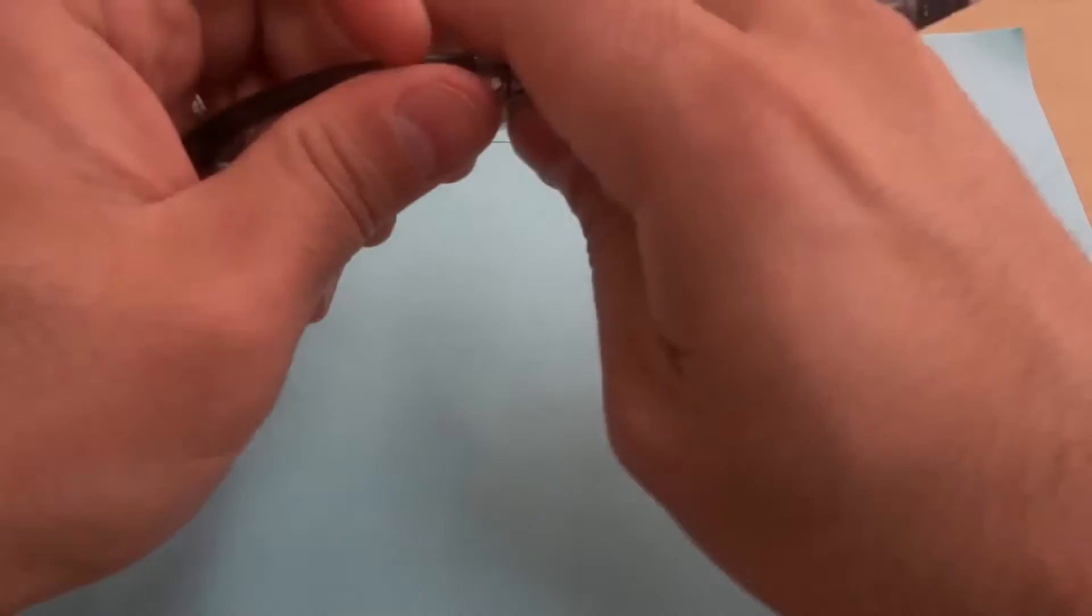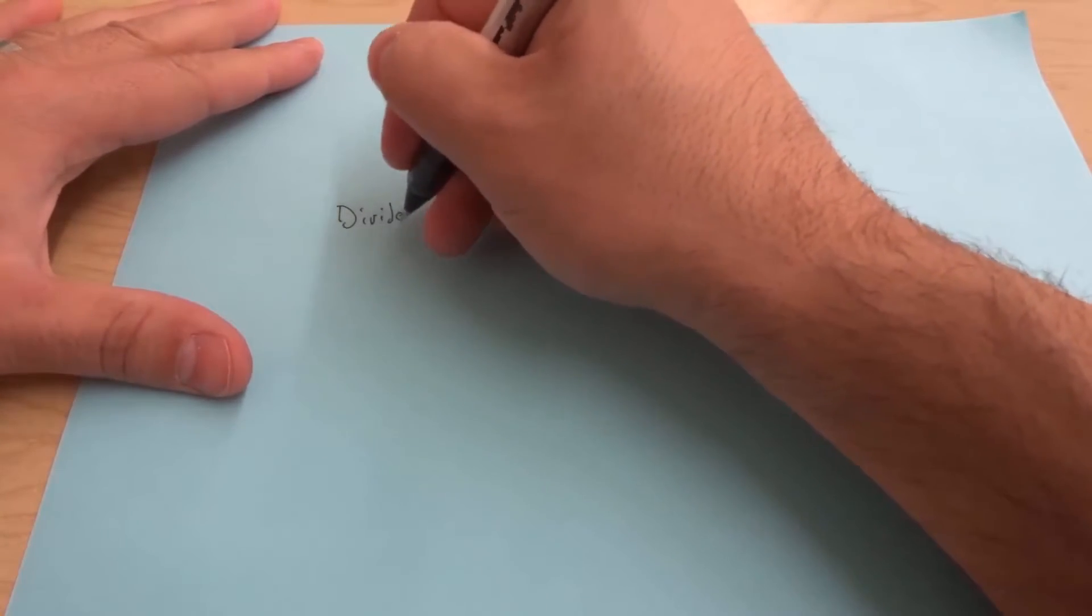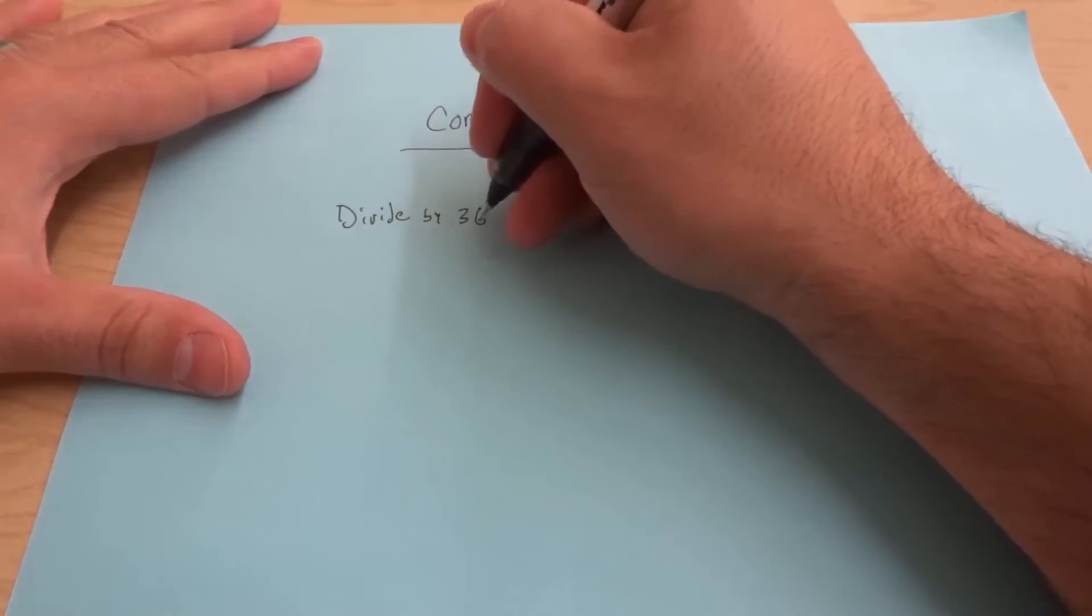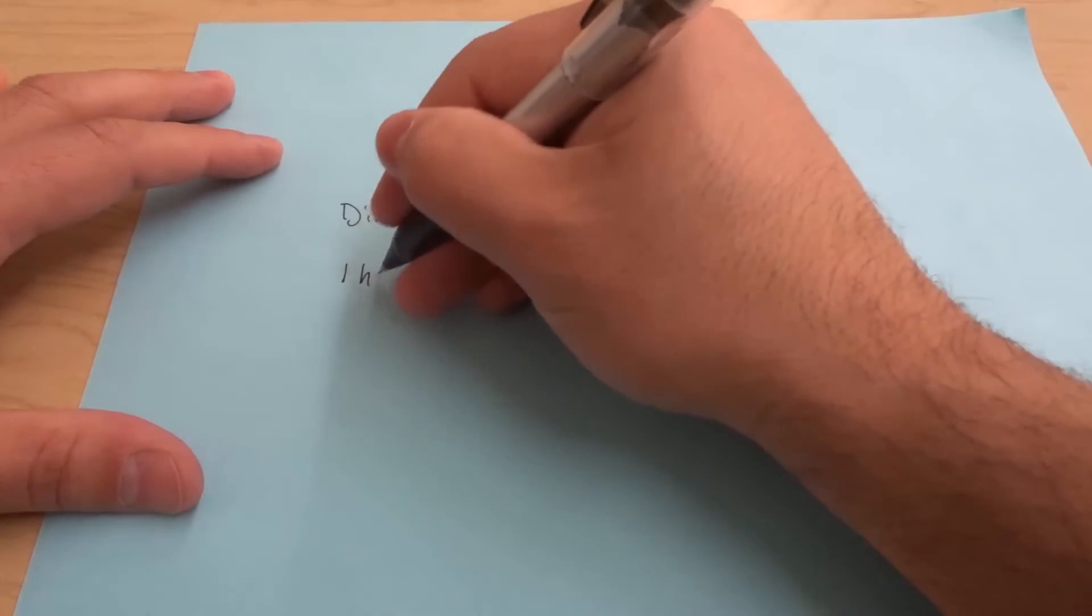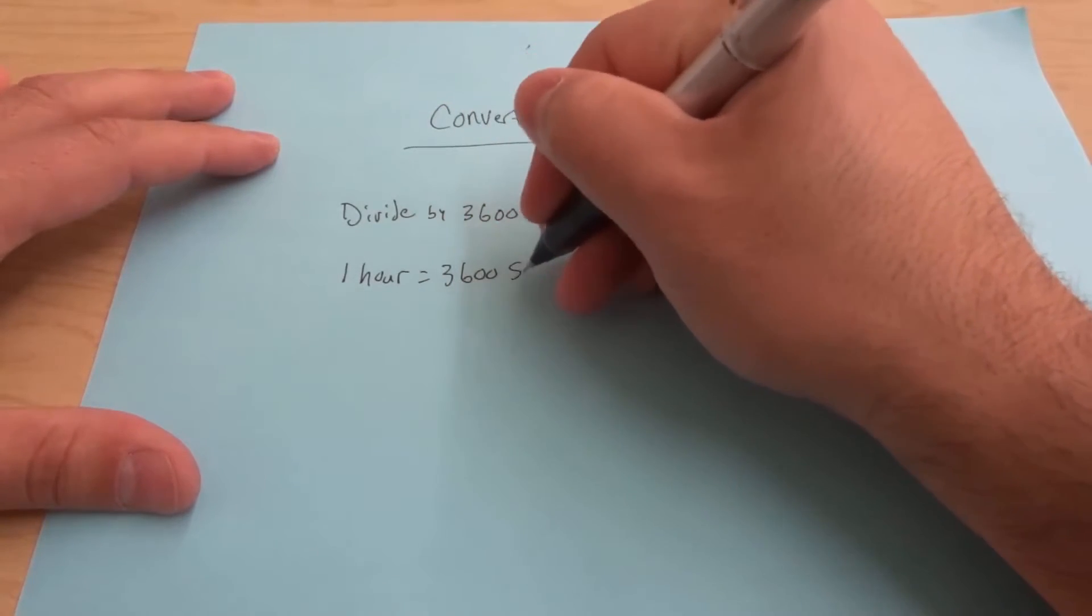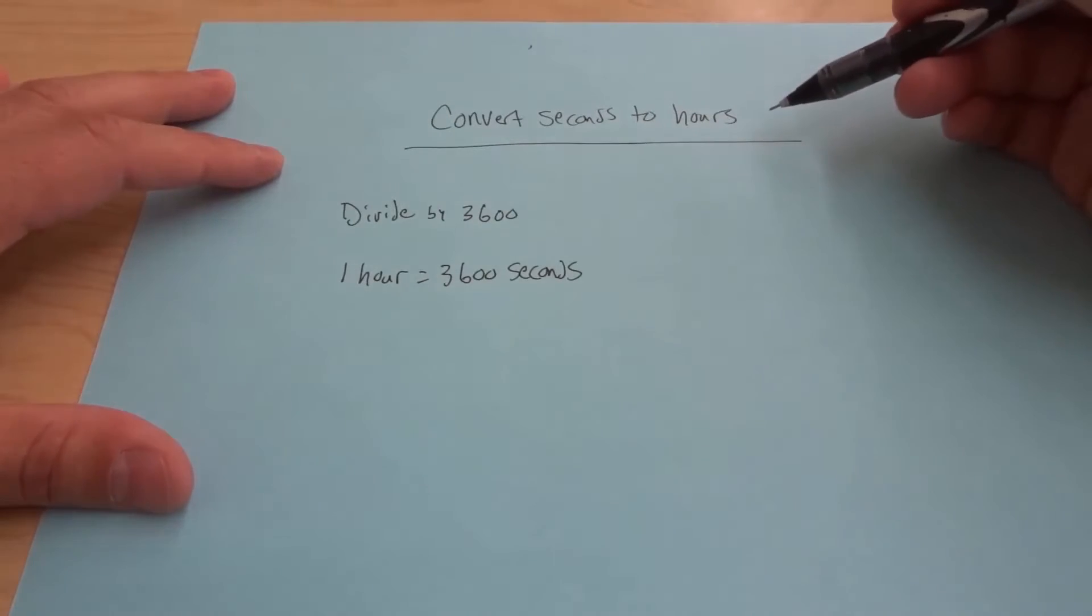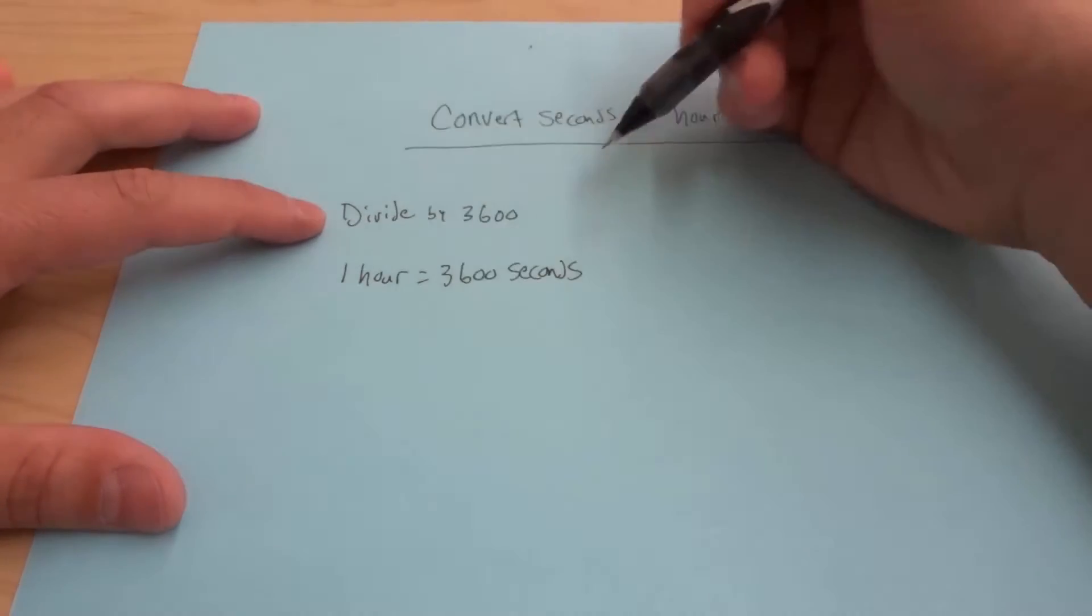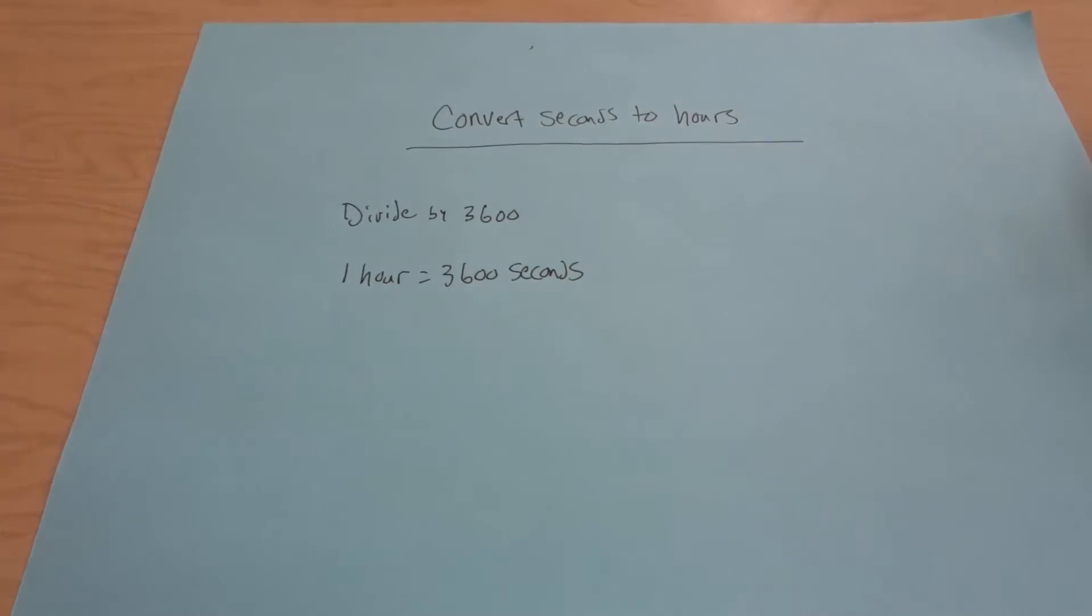So what you want to do when you want to convert seconds into hours is you want to divide by 3,600. And that's because in one hour there are 3,600 seconds. So if you want to convert seconds into hours, all that you really have to do is divide the number of seconds by 3,600 and that will give you the number of hours.